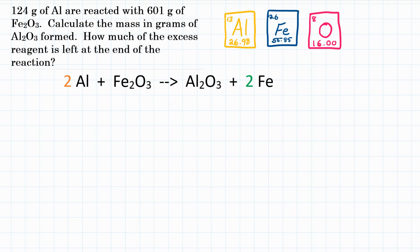We have 124 grams of aluminum, and we're going to react it with 601 grams of Fe₂O₃. This is a limiting reactant problem because we were given amounts of both of our reactants. We need to figure out which one is the limiting reactant — meaning which one will have all of its mass react. We're going to set up two stoichiometry problems.